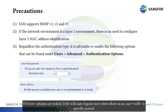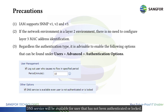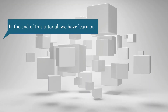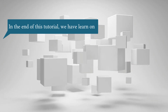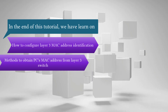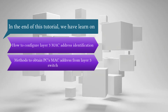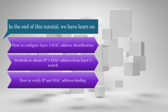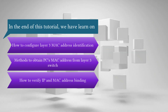If the below options are ticked, IAM will auto log out the user when there is no user traffic in a specific period. DLS service will be available for users that have not been authenticated or are locked. In the end of this tutorial, we have learned how to configure layer 3 MAC address identification, methods to obtain the PC's MAC address from a layer 3 switch, and how to verify IP and MAC address binding.